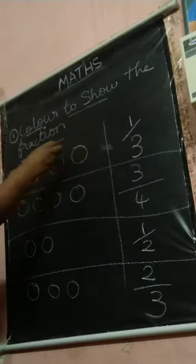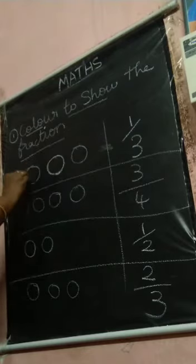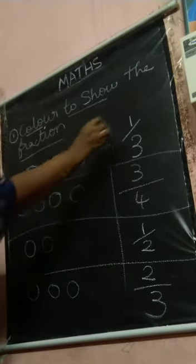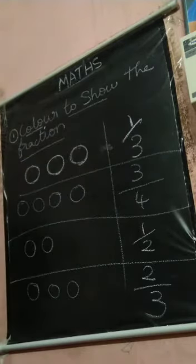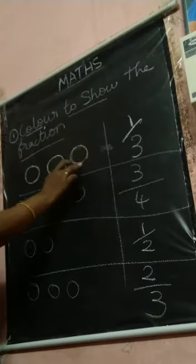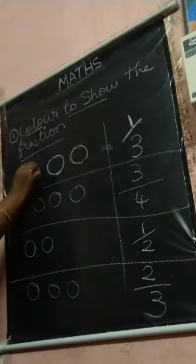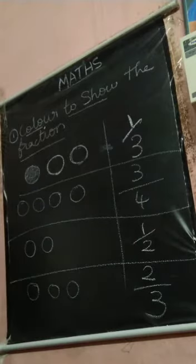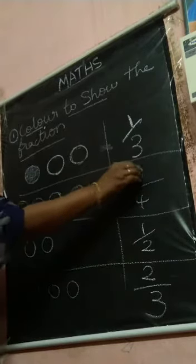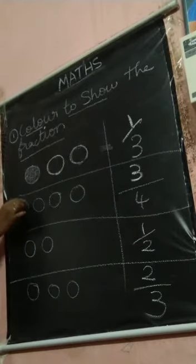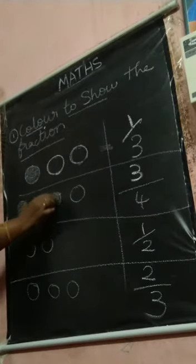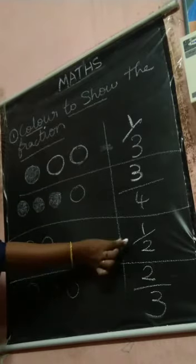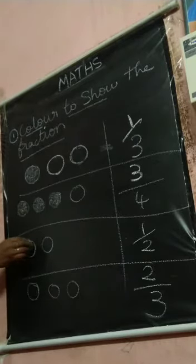Here 1 by 3 — there are 3 balls, so 1 by 3 means how many balls are you going to color? Only 1 ball you are going to color. Here 3 by 4 — how many balls are you going to color? 3 balls you are going to color. Here 1 by 2 — 1 ball you are going to color.